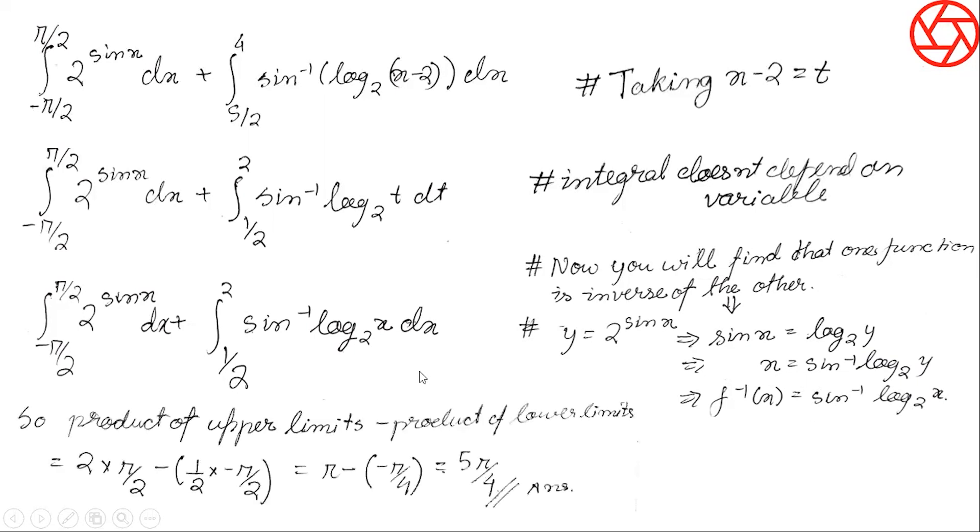Now simply apply the conclusion we had found in the previous slide. That is, the product of the upper limits minus the products of the lower limit. Simply subtract the products of lower limit from the products of upper limit. Product of upper limit is 2 into pi by 2, and product of lower limits is half into minus pi by 2. Subtracting them, here it is pi, and here it is minus of pi by 4. So pi minus minus of pi by 4 gives you the result 5 pi by 4. So finally, this is your answer, that is 5 pi by 4.